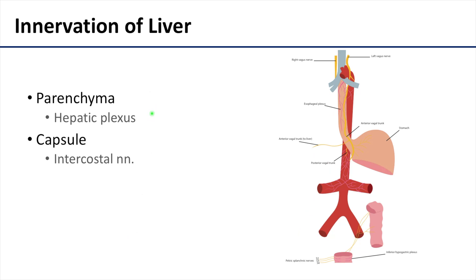The parenchyma of the liver is innervated by the hepatic plexus, the largest offshoot of the celiac plexus, containing both sympathetic and parasympathetic fibers. Additionally, the capsule surrounding the external surface of the liver has innervation from the intercostal nerves, so somatic nerve supply is also present in this region. This concludes the overview of the liver; for additional information and images please refer to the BlueLink website.